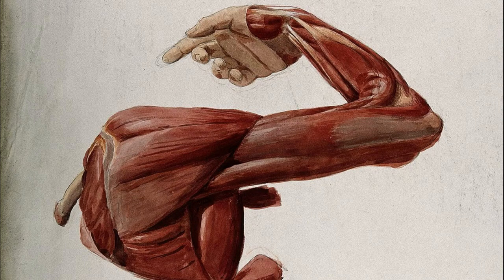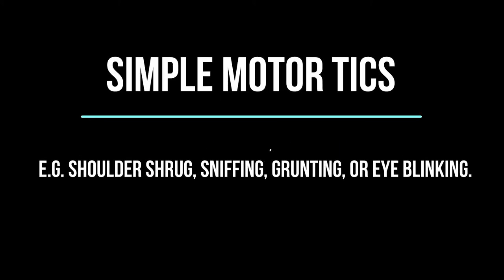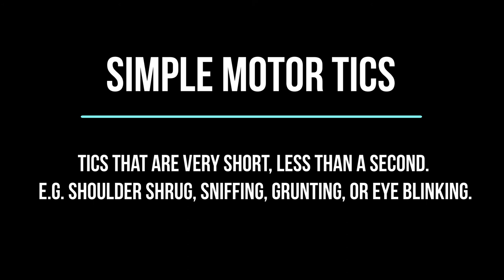Tics can include any muscle group or vocalization. Certain tics can be like a throat clearing or an eye blinking. Generally these are involuntary, but an individual can suppress them for a certain period of time, while other individuals cannot suppress them. Tics can be called simple or complex. Simple motor tics are very short — less than a second — and can include a shoulder shrug, sniffing, grunting, or eye blinking, usually caused from contraction within the diaphragm.